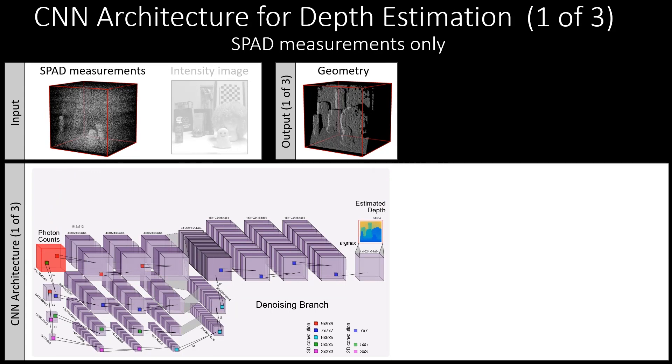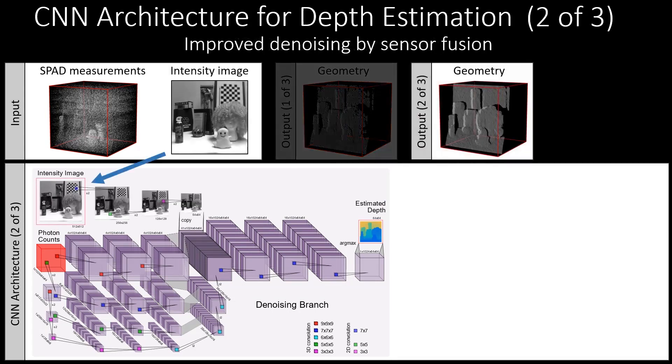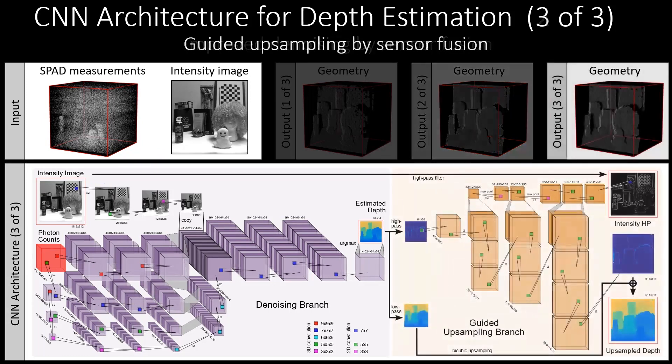In the second case, an intensity image is also input to the network and combined with features from the SPAD measurements, resulting in improved denoising performance.